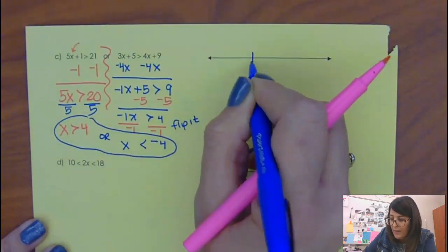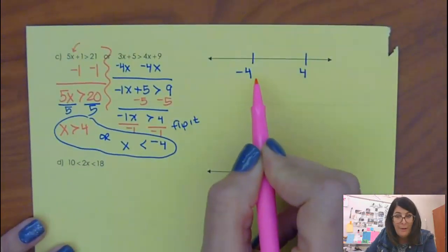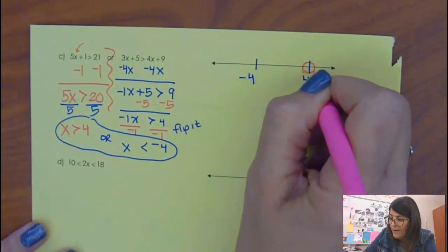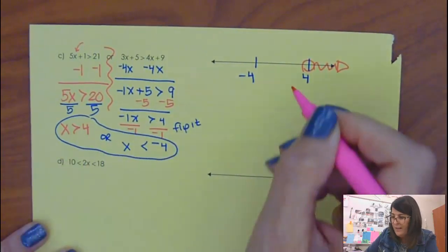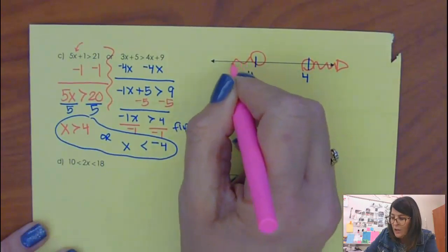So here's my answer: X is greater than 4 or less than negative 4. You've got to put the smaller number on the left, the bigger number on the right. It's greater than 4, open circle because it doesn't have an equal sign. Open circle because it doesn't have an equal sign, and it's going to the left.